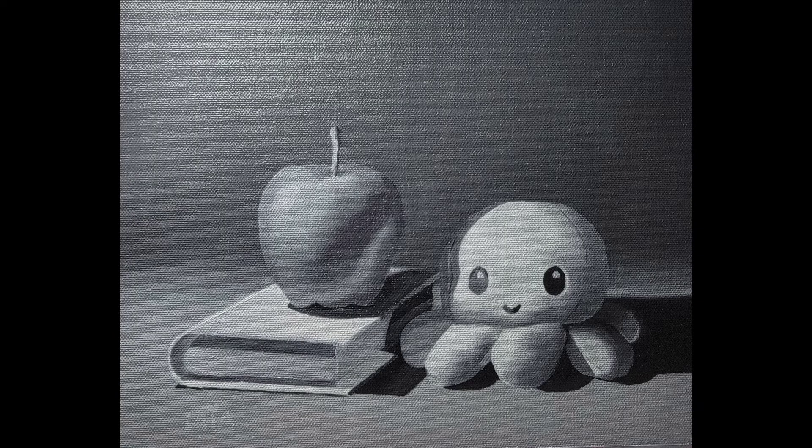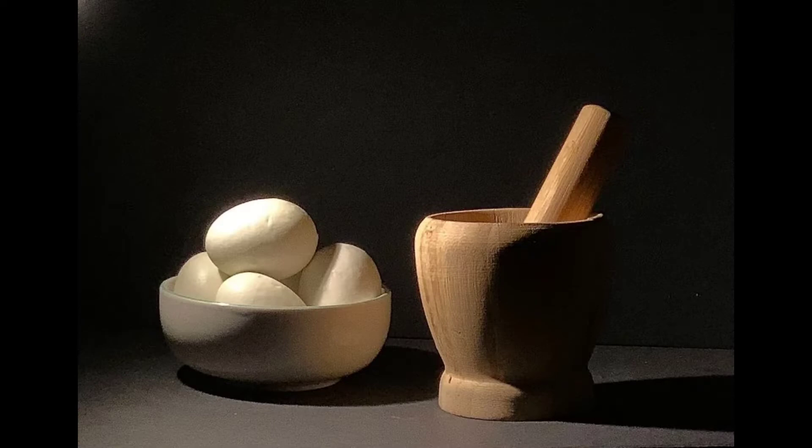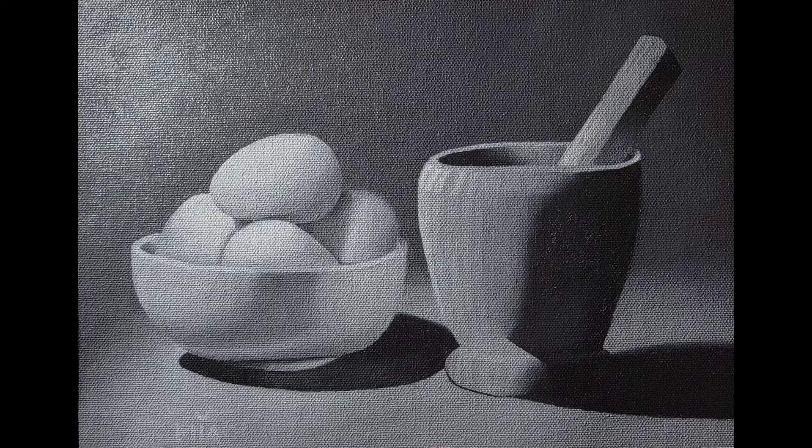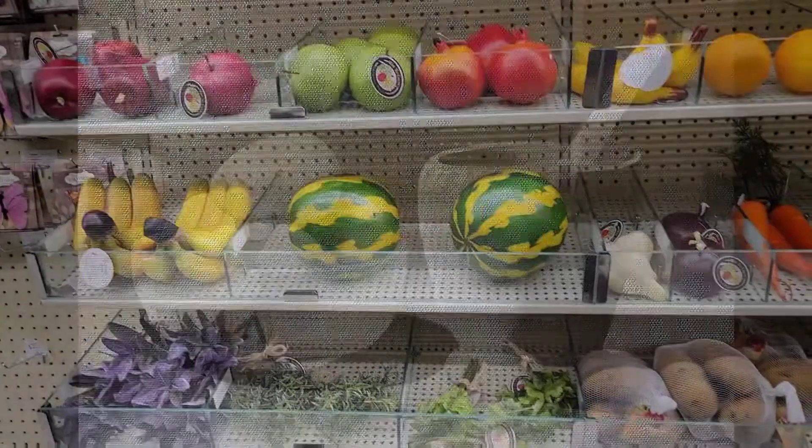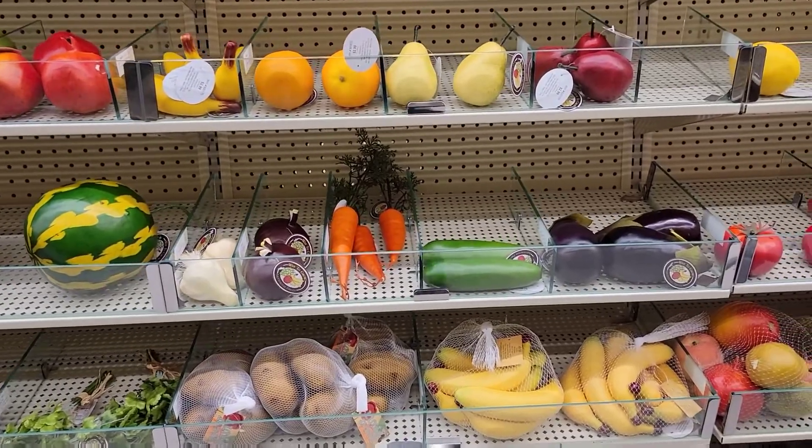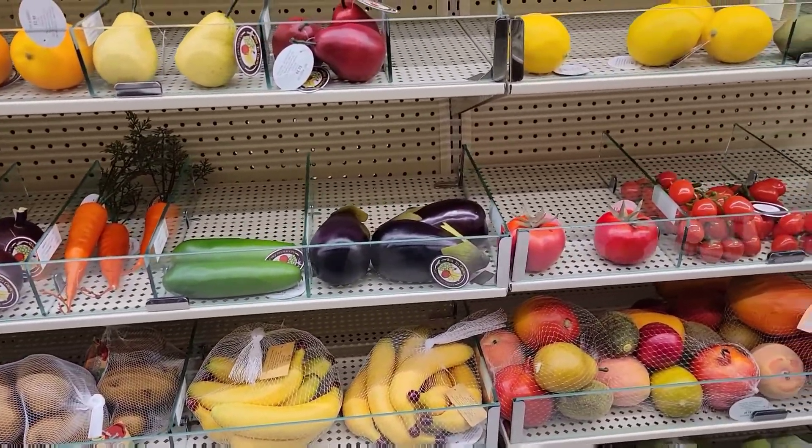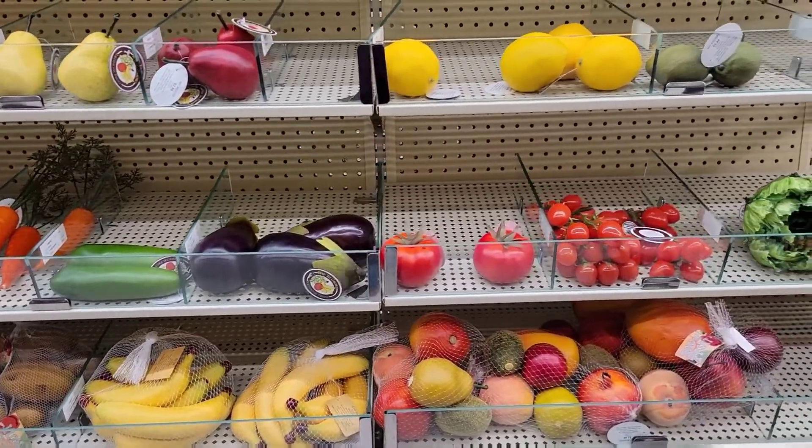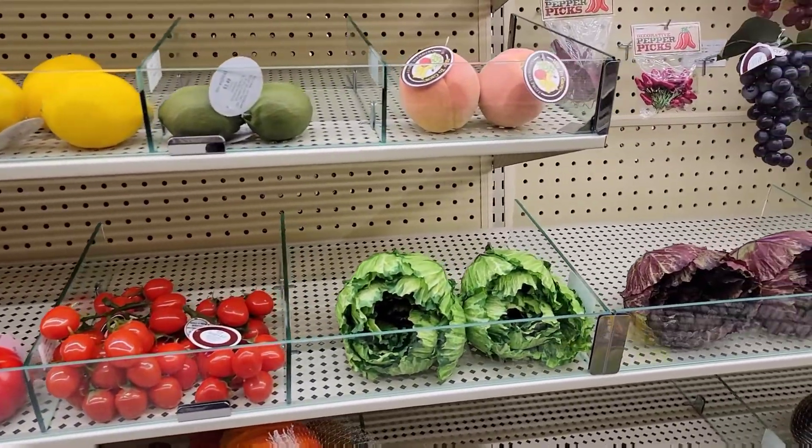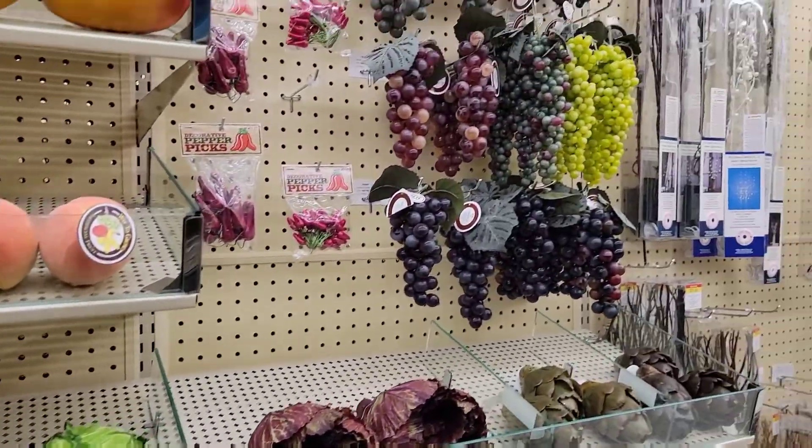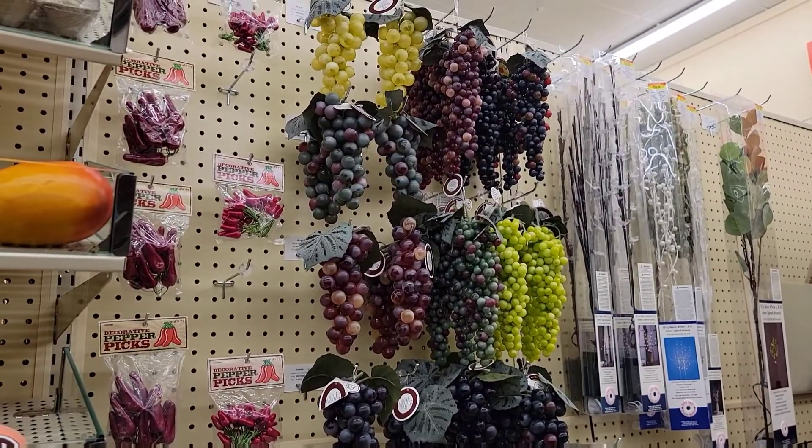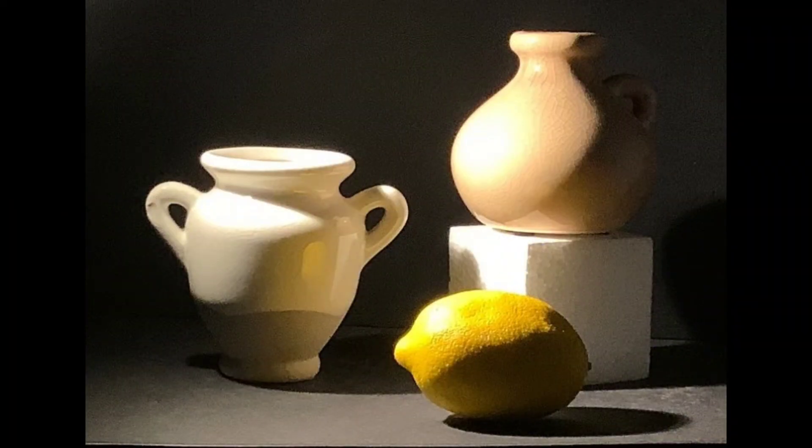The advice I have for anyone starting block two is in the beginning, definitely keep your still life objects simple. If you need help, reach out to one of the instructors. If you're looking for new or exciting props, you can go to a thrift store. Some of my props I got from Hobby Lobby and Blick Art Materials. If you want to paint fruit and vegetables, I highly recommend you get the artificial kind so that way you don't have to worry about anything spoiling.